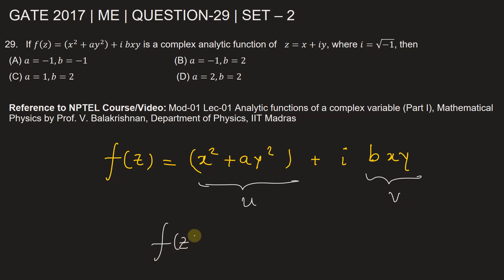From here we can write f of z is equal to u which is a function of x and y plus iota v which is a function of x and y.